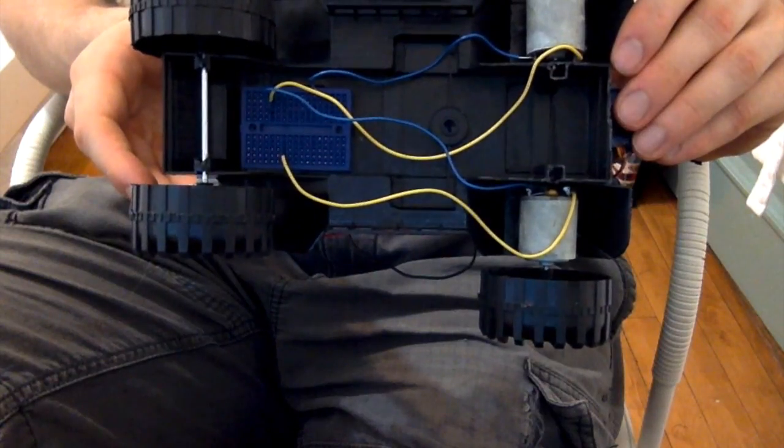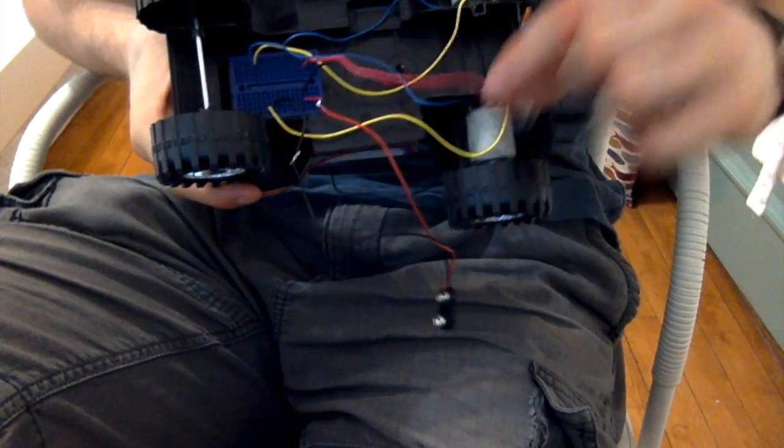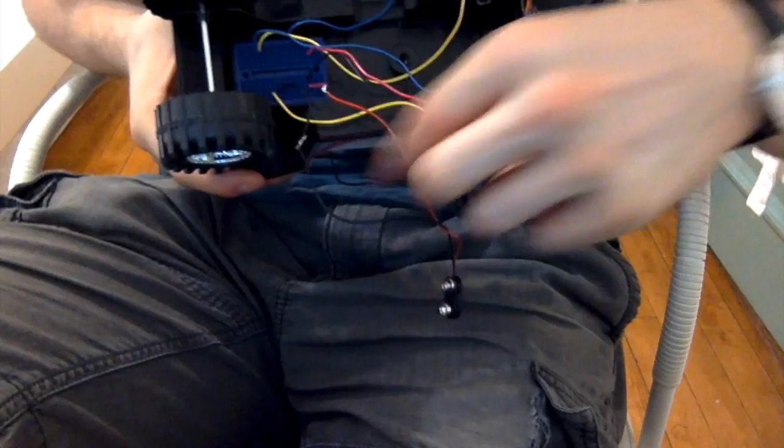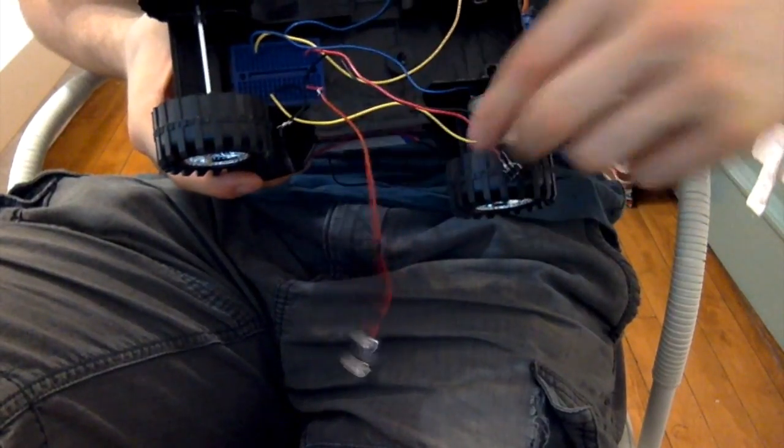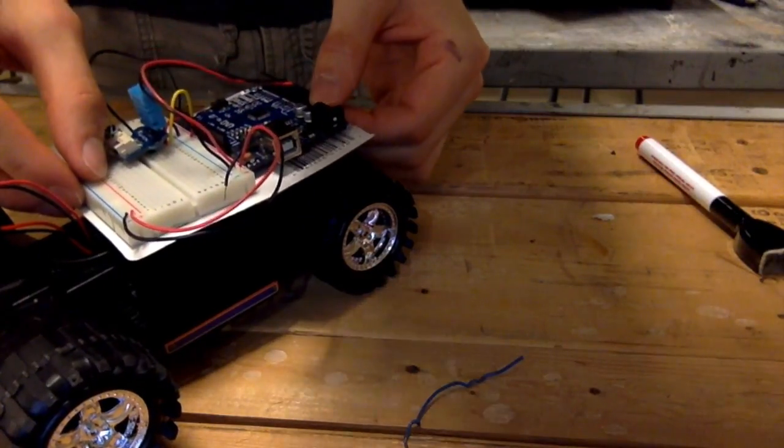I've attached the breadboard to the bottom of the car as well and wired the motors into it. And then here is the switch and the 9 volt terminal included in the circuit. Now let's mount the other circuit onto the top of the car.